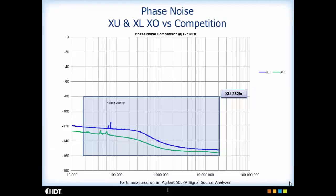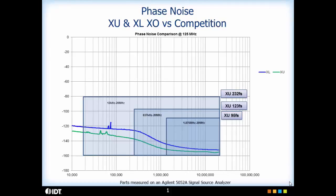In addition to the typical 12 kHz to 20 MHz bandwidth, different applications like ethernet have other bandwidth jitter requirements, depending on whether it's gigabit ethernet, 10 GB ethernet, 100 GB, etc. Looking at some of the other common bandwidths, like 637 kHz to 20 MHz, the XU phase jitter goes down to 123 femtoseconds, and over 1.875 MHz to 20 MHz, it is under 100 femtoseconds. It is important when comparing jitter specifications between different parts that the bandwidth the jitter was measured over is the same to get a true comparison.